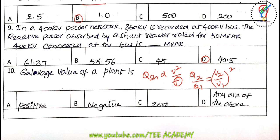Tenth question: the salvage value of a plant may be a positive value, may be a negative value, or may be zero. So the answer is 'any one of the above.'